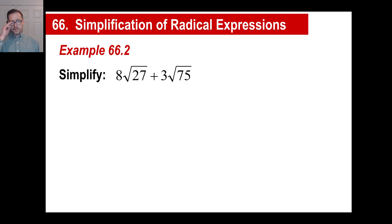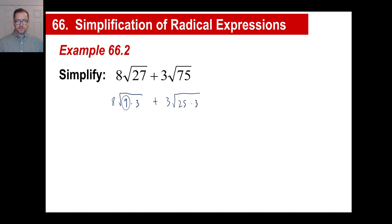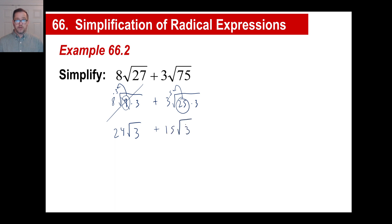Let's do another one. We've got an 8 on the outside. You probably recognize this is going to be 9 times 3 — that's a perfect square — and I've got a 3 here. And you probably recognize this as 25 times 3. Now we can work with these. The square root of 9 comes out; that's times 3, because 3 is the square root of 9. So we'll have 8 times 3, or 24, times the square root of 3. This one: the square root of 25 comes out, that's times 5. 3 times 5 is 15, square root of 3. Now look — they're like terms, both square root of 3. So 24 plus 15 is 39, square root of 3.